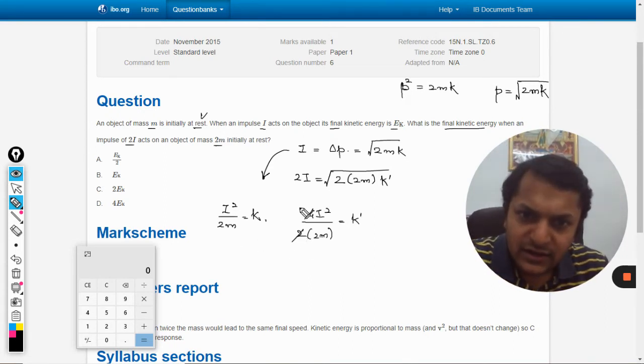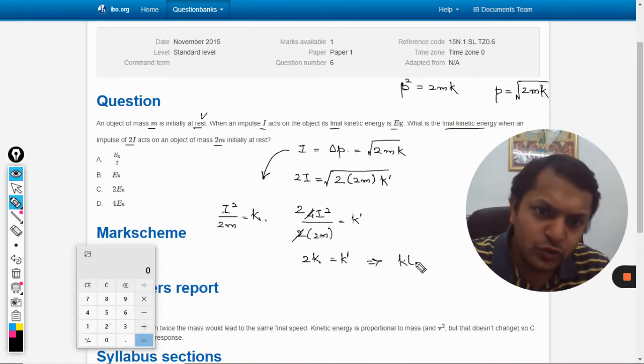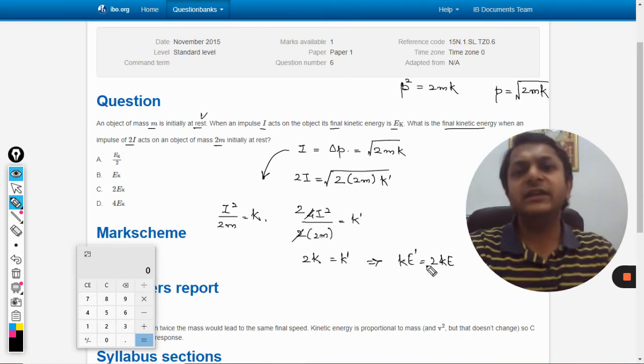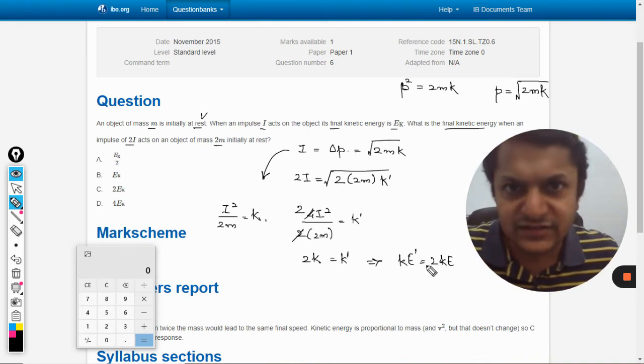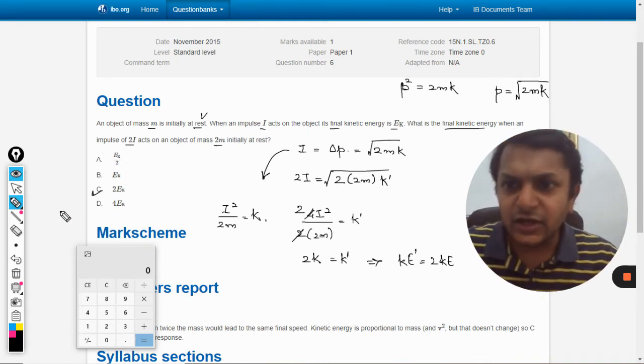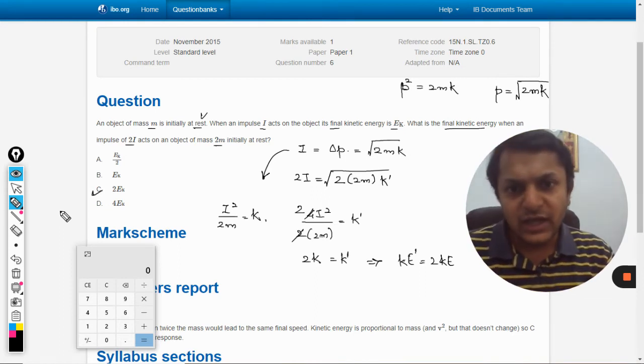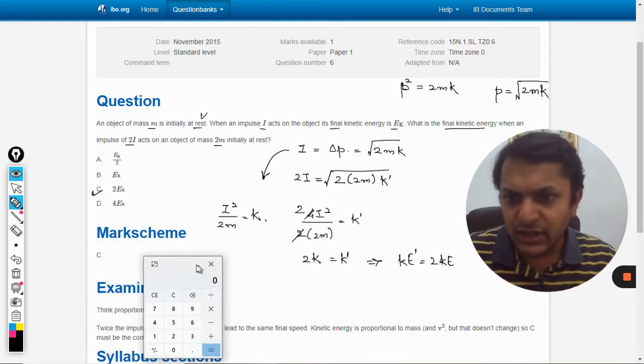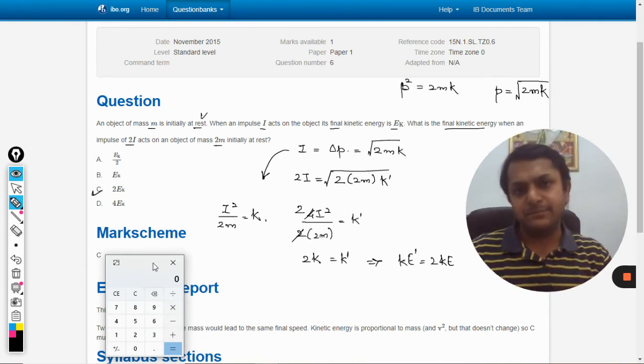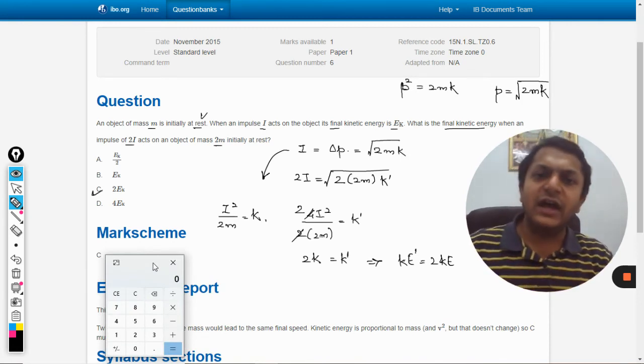2k is equal to k dash. It means our new kinetic energy in the second case is double the kinetic energy in the first case. Accordingly, C should be the right answer. Let us see according to the mark scheme, and yes, the answer is C.